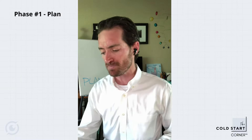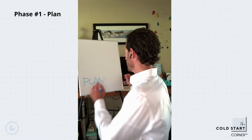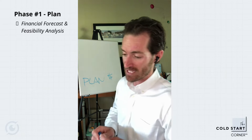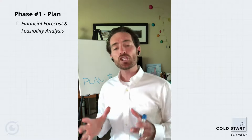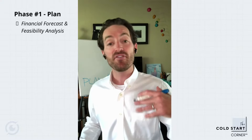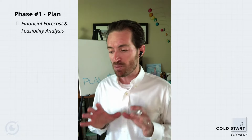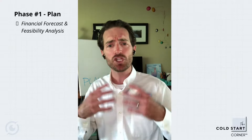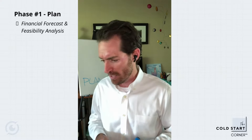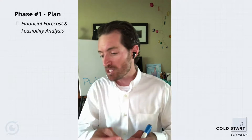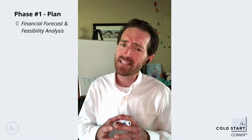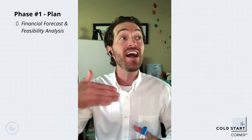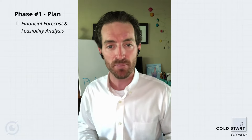There are two key components to this planning phase. The first is going to be the financial forecast and feasibility analysis. This is where you're taking the time to quantify all of the financial requirements of the venture, as well as project the cash flows and conduct sensitivity analysis. Specifically, you'll explore things like your startup costs and capital investment, revenue and expense modeling, cash flow projections, and financing requirements to establish financial feasibility of the venture.